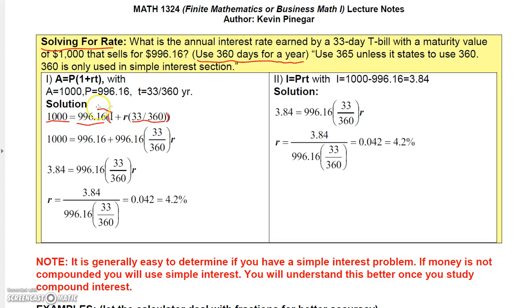If you distribute the 996.16 here, you get 996.16 times 1, and then 996.16 times 33 over 360R. Okay, well then, what you could do is subtract this 996.16 from 1,000, and you get 3.84 equals all of this times R. So then just take 3.84 and divide it by all of this, and it will give you R.